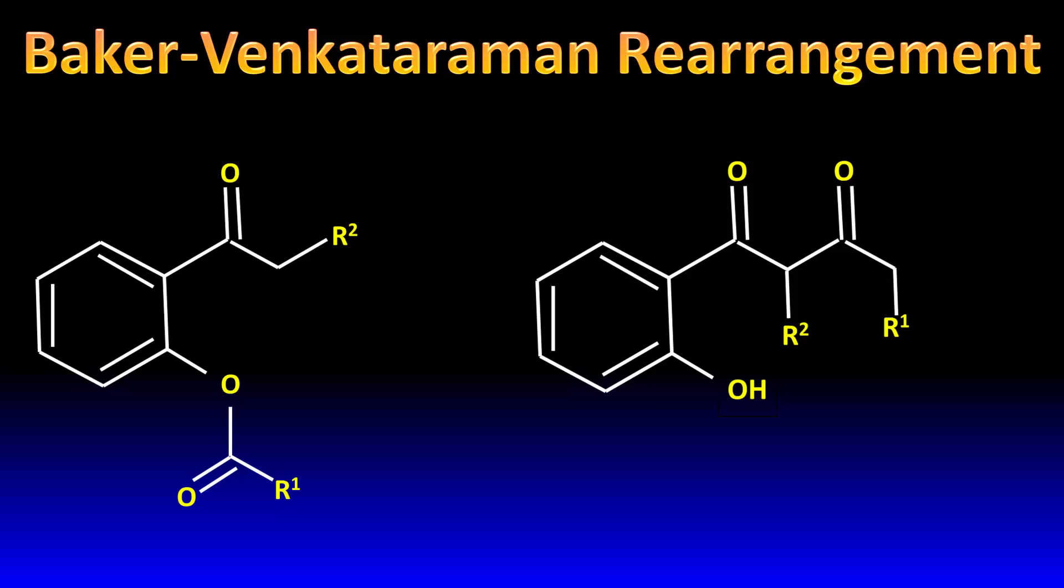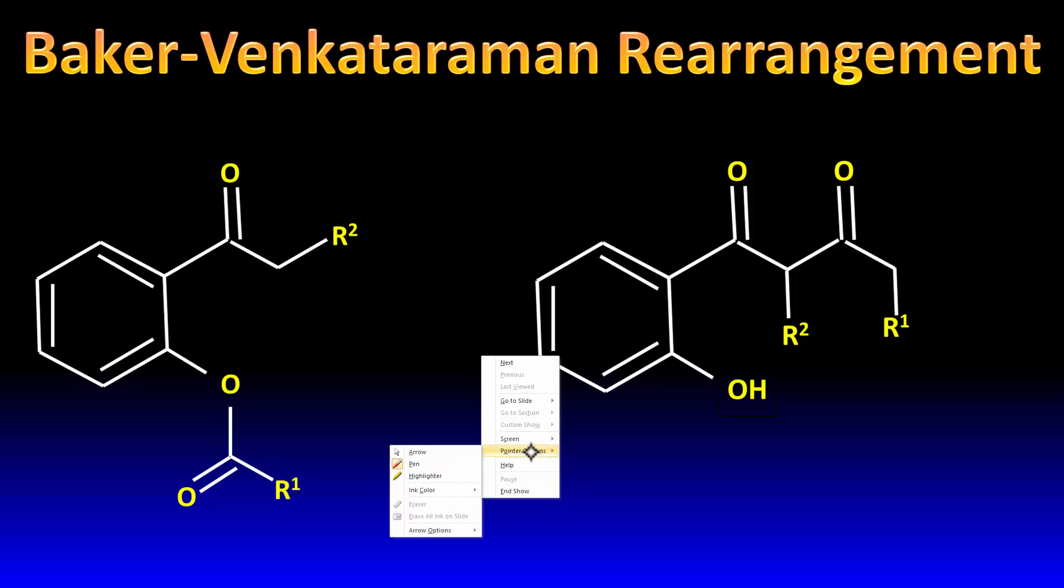In alphabet B, the first was Baeyer-Villiger oxidation. Today we're doing Baker-Venkataraman rearrangement. This rearrangement is very similar to Claisen condensation, which we'll cover in a separate video.